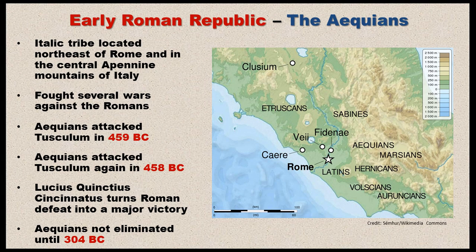The other tribe that gave the Romans a lot of grief were the Aquians — an Italian tribe located northeast of Rome, right in the middle of the Apennine Mountains. The Aquians fought several wars against the Romans and were a constant threat. One of the more notable incidents occurred in 459 BC when the Aquians attacked one of Rome's allies at Tusculum. The Romans rushed an army there and drove the Aquians out, and a peace treaty was signed. One year later, the Aquians violated that treaty and attacked Tusculum again in 458 BC.